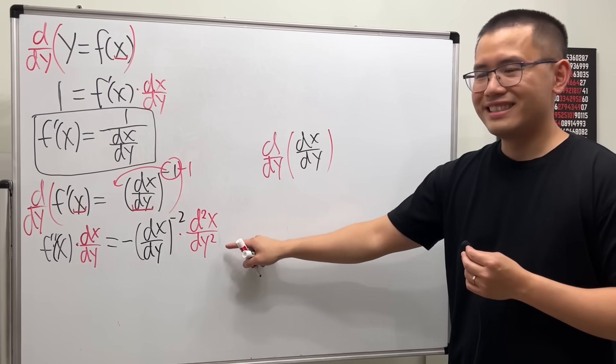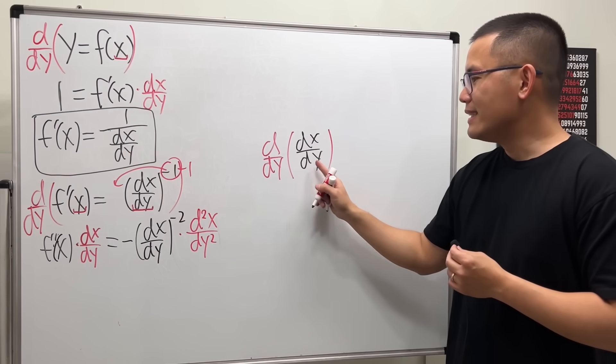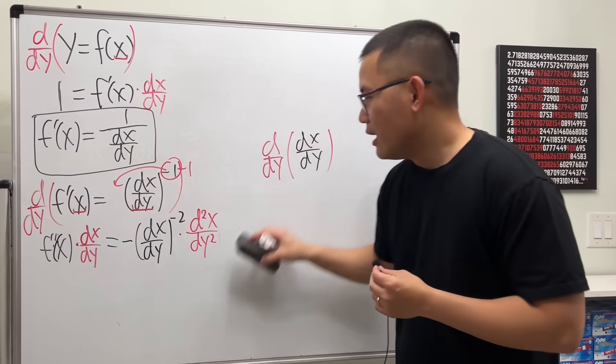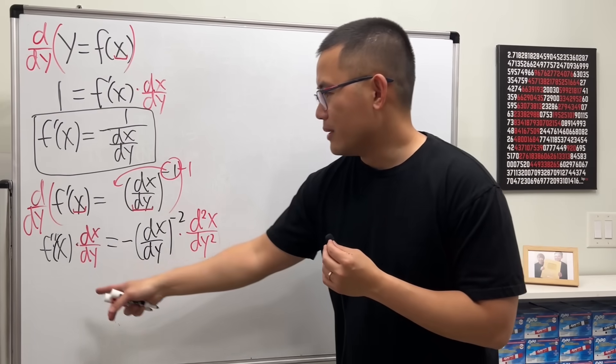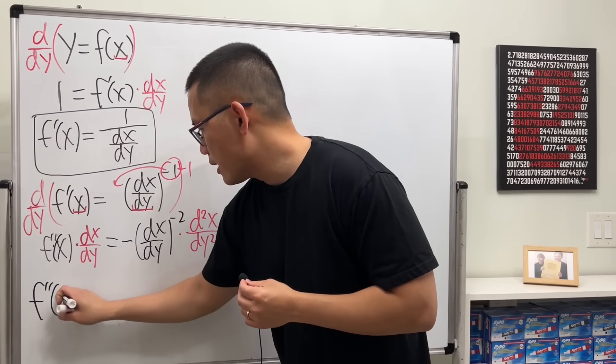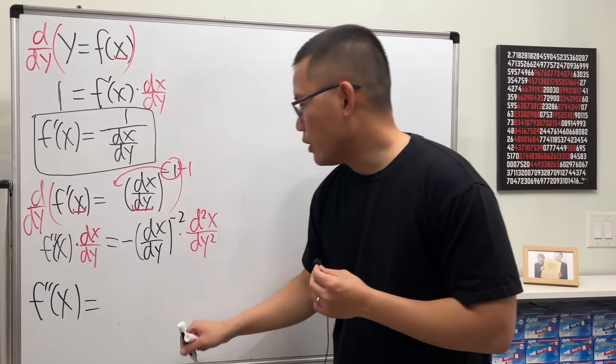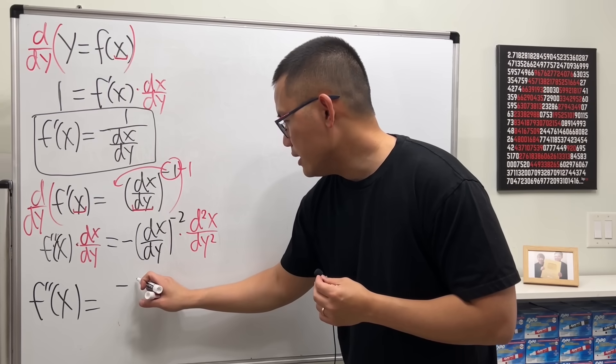And notice where the two is, because we have the d and d right here twice, and then dy, dy twice on the bottom. Okay, now we are going to fix this a little bit. I'm going to solve for f double prime.